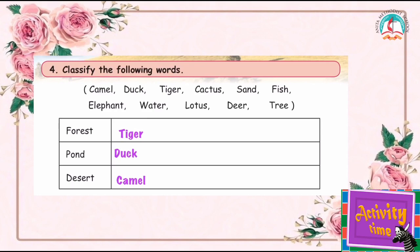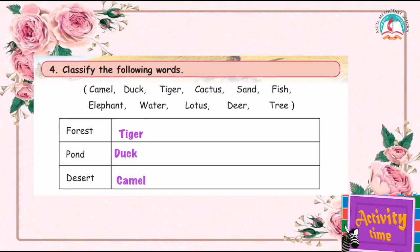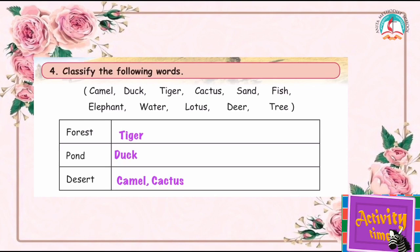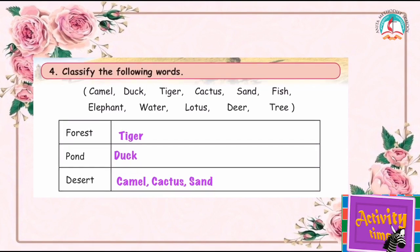You can see the cactus in a desert, so write the word cactus under the desert column. Have you finished children? The next word is sand — we can see sand in the desert, write the word sand in the desert column. What is the next word? Fish! You can see fish in a pond.